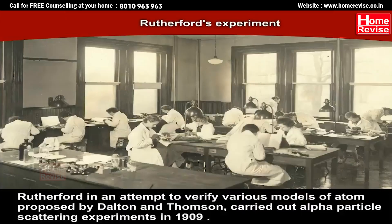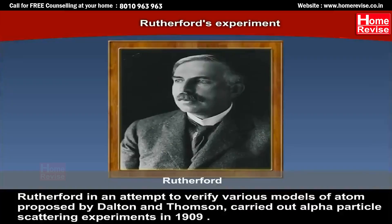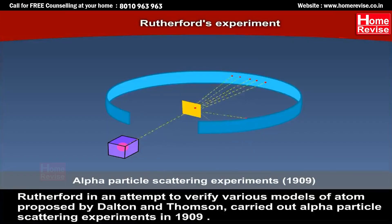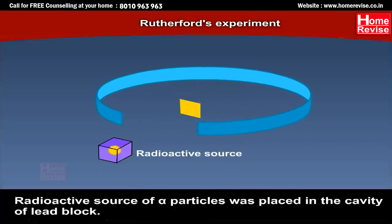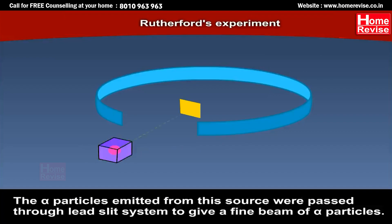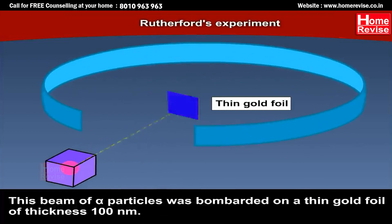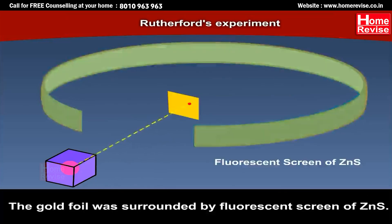Rutherford, in an attempt to verify various models of the atom proposed by Dalton and Thompson, carried out alpha particle scattering experiments in 1909. A radioactive source of alpha particles was placed in the cavity of a lead block. The alpha particles emitted from this source were passed through a lead slit system to give a fine beam of alpha particles. This beam was bombarded on a thin gold foil of thickness 100 nanometers. The gold foil was surrounded by a fluorescent screen of zinc sulfide.